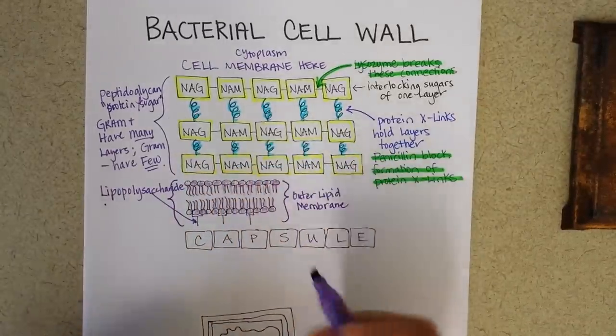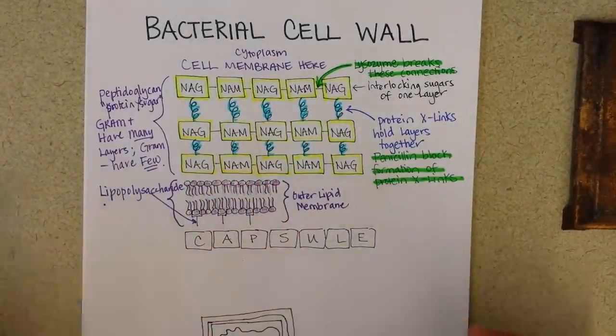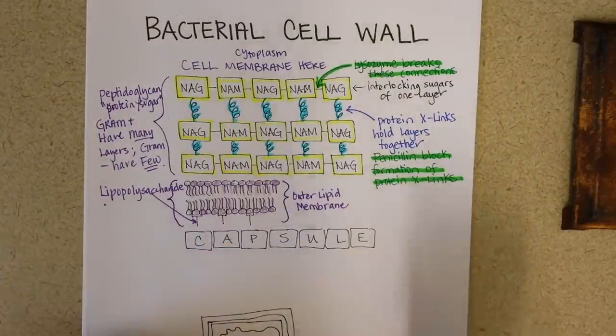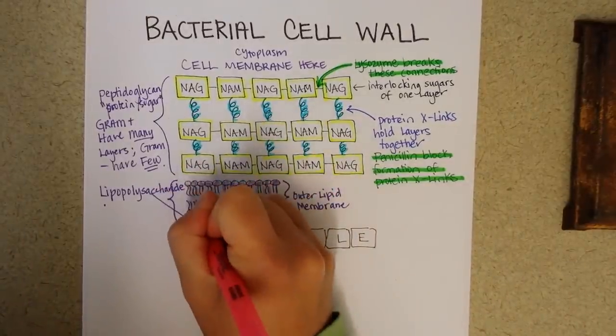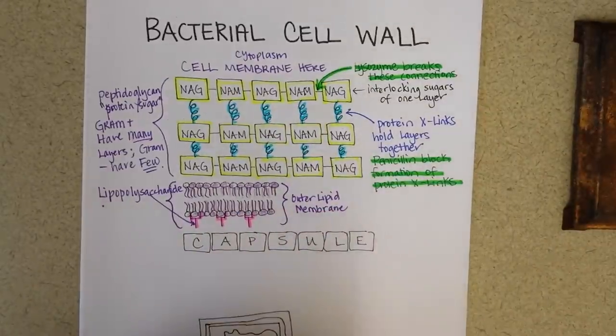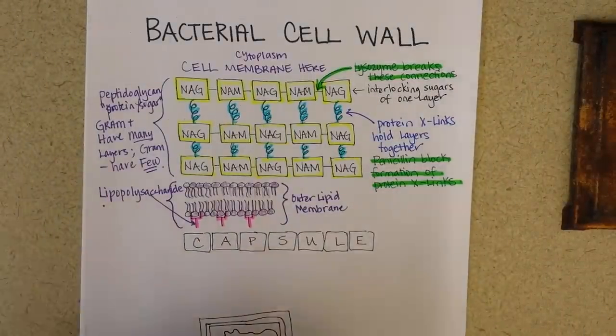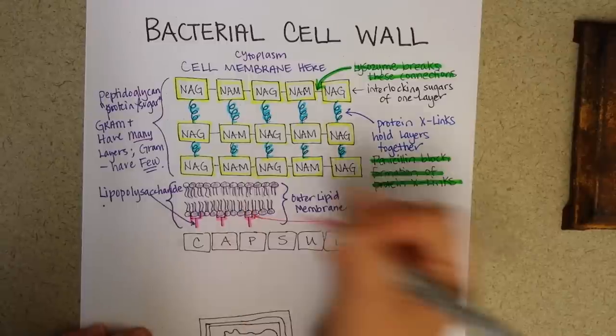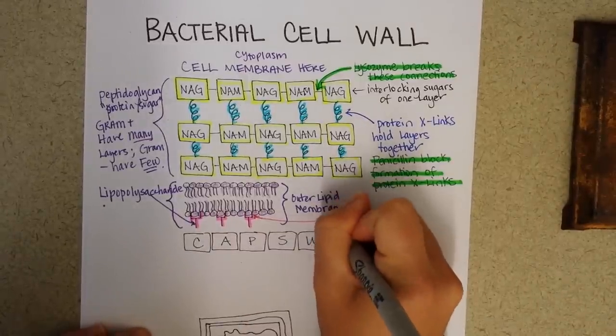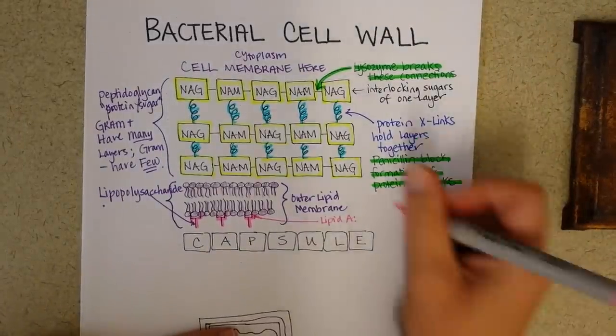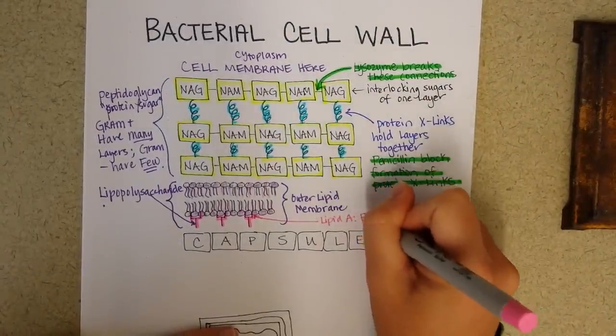But one thing that's really unique about it, and special to gram negative, is that it has something called the LPS or lipid polysaccharide. We're going to highlight that in bright pink. And it has two parts to it. Lipid A is the part that is most inner, right here. And it's what we call an endotoxin, because it's part of the bacterial cell wall.